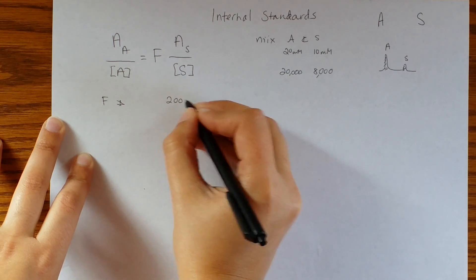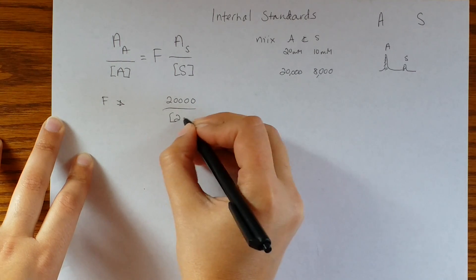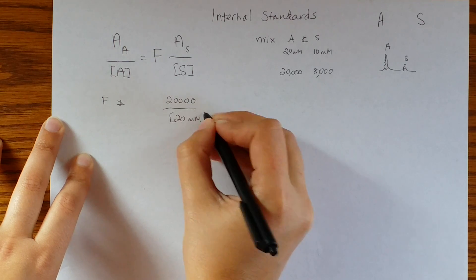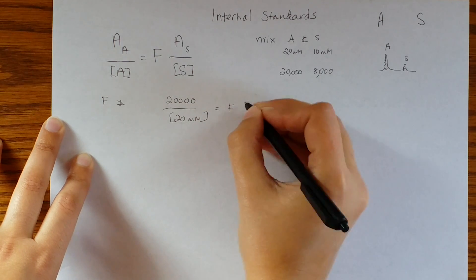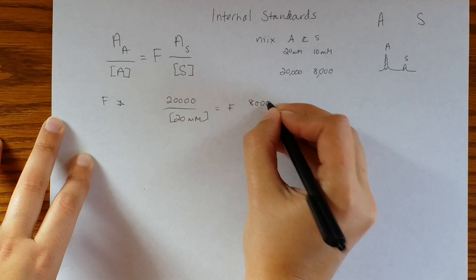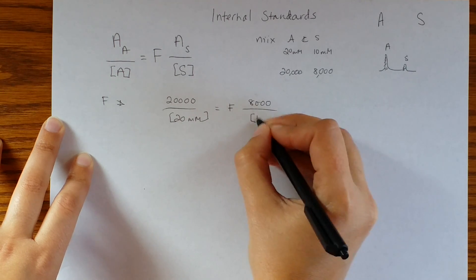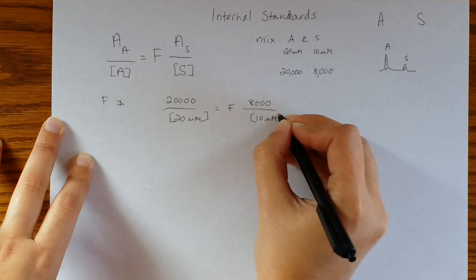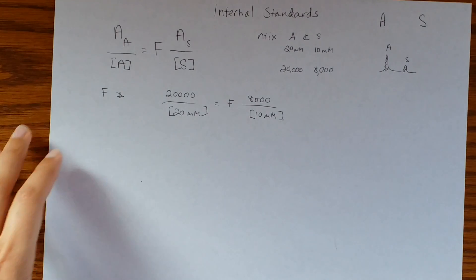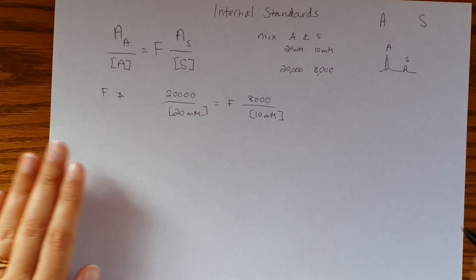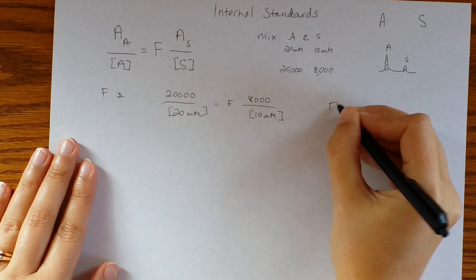The way you do that is you just plug these things in. So the area of the analyte was 20,000, I know that its concentration is 20 millimolar. It's going to be equal to F times, okay, 8,000 is the area for that over 10 millimolar.